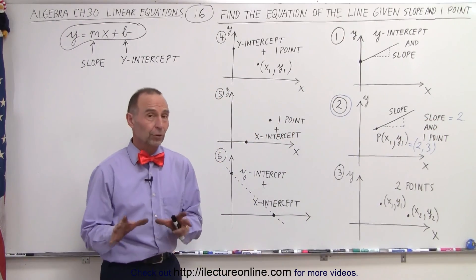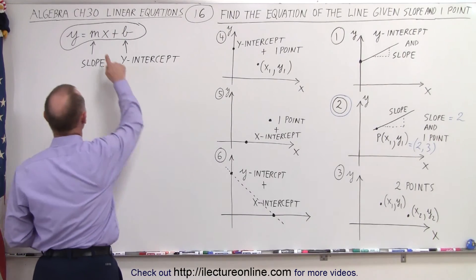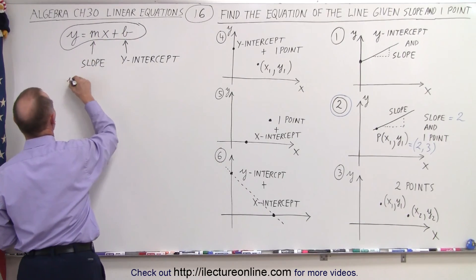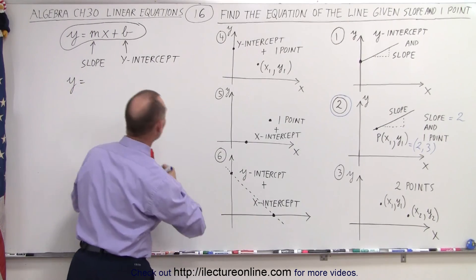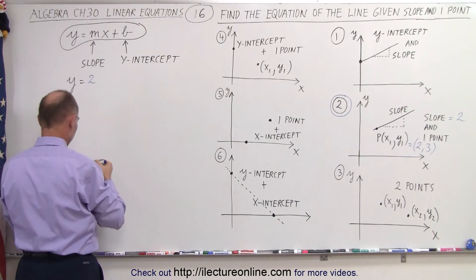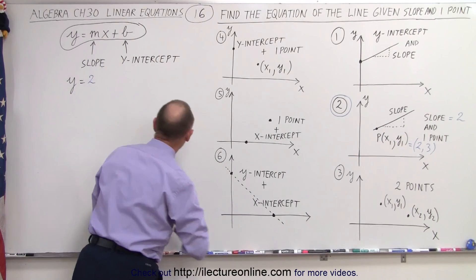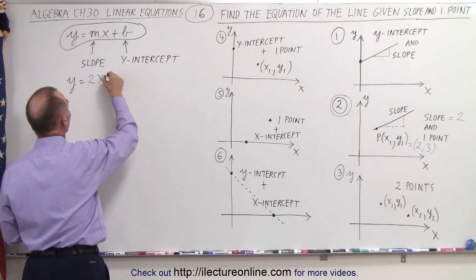So the first thing we're going to do is plug in the slope for mx. We have y equals m which represents the slope, and the slope is equal to 2. And we have now 2x plus b.